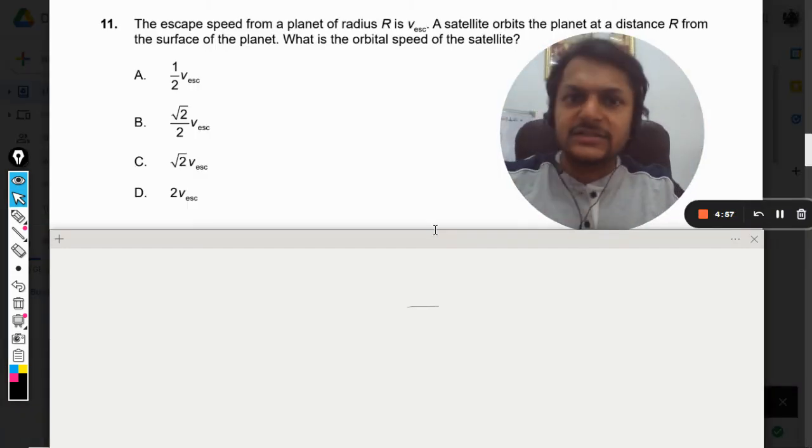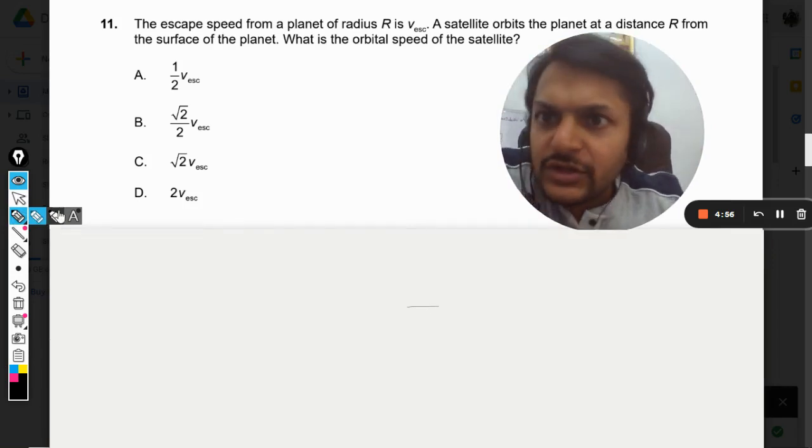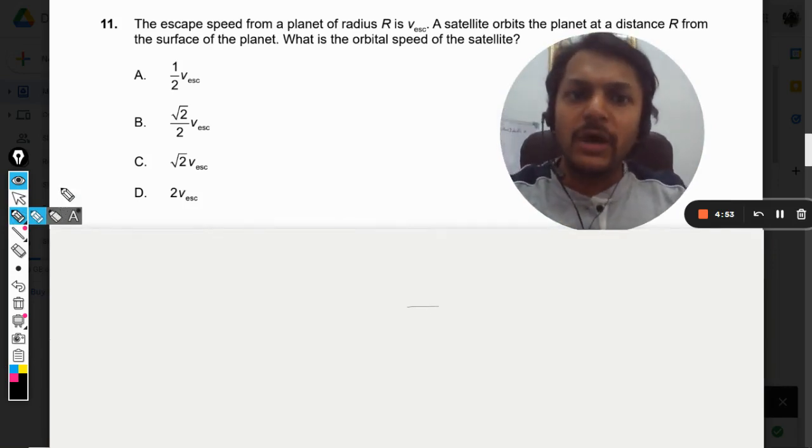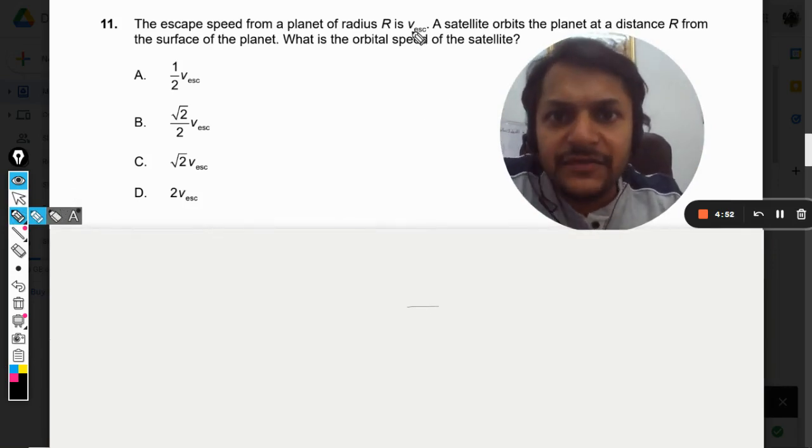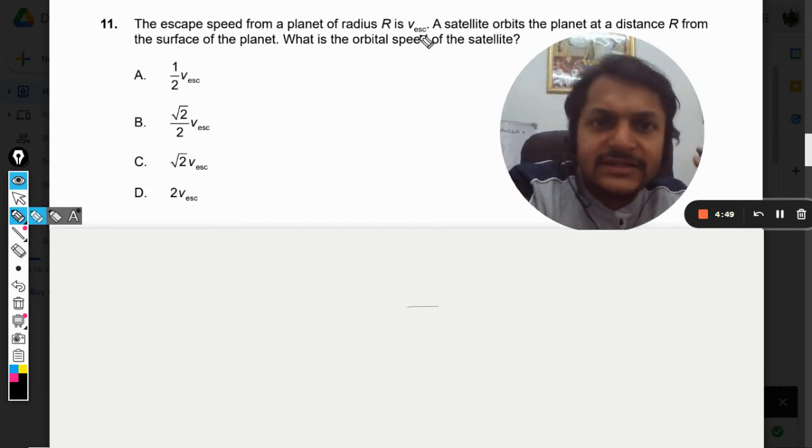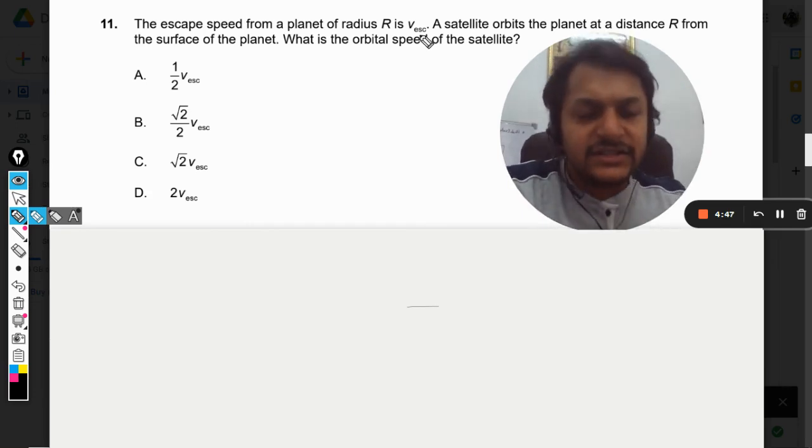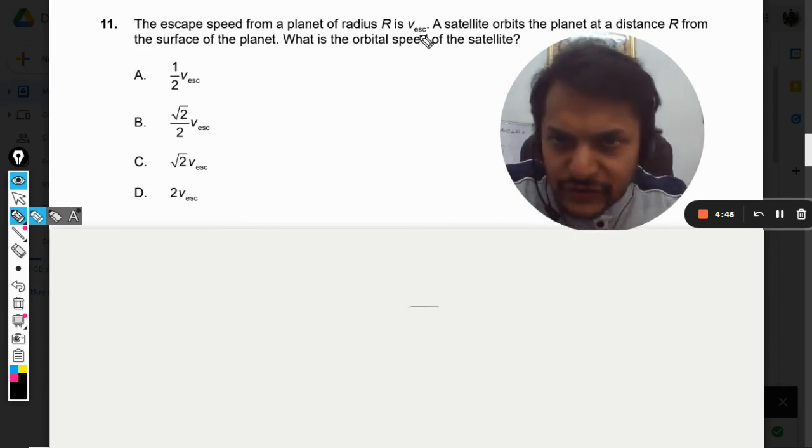Dear students, let us see what is there in this question. The escape speed from a planet of radius r is given as V_esc. A satellite orbits the planet at a distance R from the surface of the planet. What is the orbital speed of the satellite?